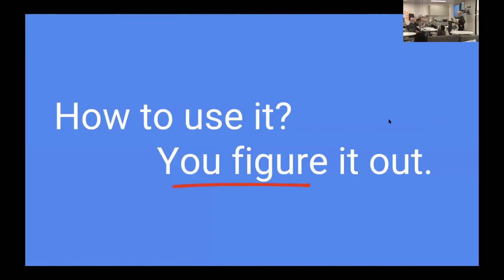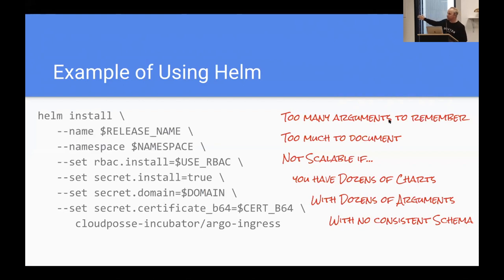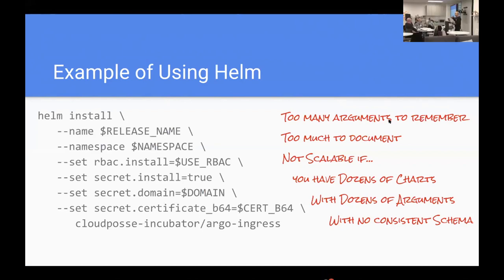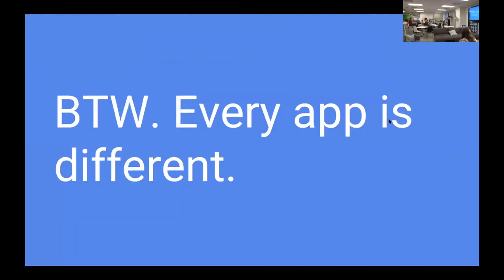The biggest problem with Helm is that there's no standard way of using it, and the documentation is pretty sparse on a lot of these charts. We spend, as consultants, most of our time figuring out how to integrate and deploy Helm charts for our customers. Your standard Helm installation looks something like this — installing the Cloudflare Nginx Ingress controller and specifying a bunch of parameters. You have dozens of arguments with no consistent schema or configuration format, and maybe 20 or 30 services you need to deploy, so documenting that in a makefile doesn't scale very well.